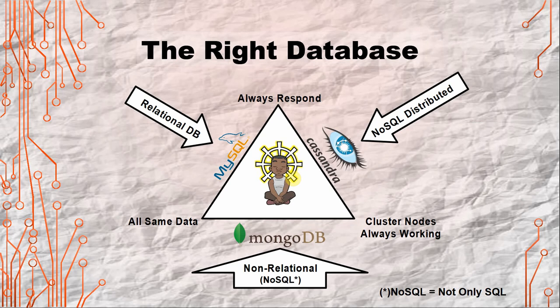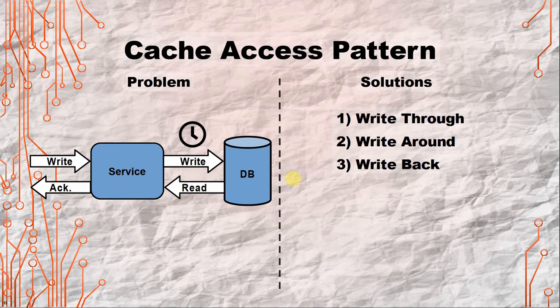With a relational database, even in a cluster setup, it always responds consistently. If you pick MongoDB, it may not always respond but the cluster nodes are always working — if one crashes, it keeps going and still has all the data. With a NoSQL distributed database like Cassandra, it always responds and the cluster nodes are always working, however it may not have all the same data across nodes. I'm aware that Cassandra can be configured to be close to full consistency, but I haven't confirmed that myself yet.